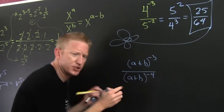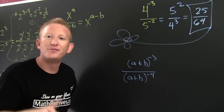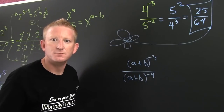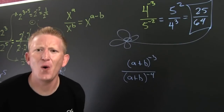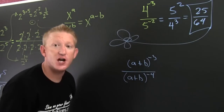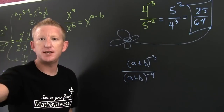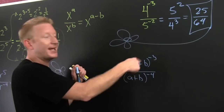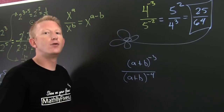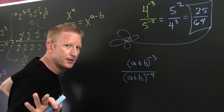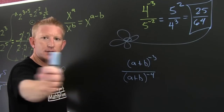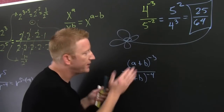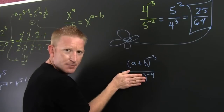Do these have the same base? Never, ever, ever, ever do this over a sum. I cannot apply this rule here because that is a product. Now that that's all been said — it's like the Men in Black were here, just erase that idea from your thoughts. What do we have? I have hand to the minus 3rd and I have hand to the minus 4.